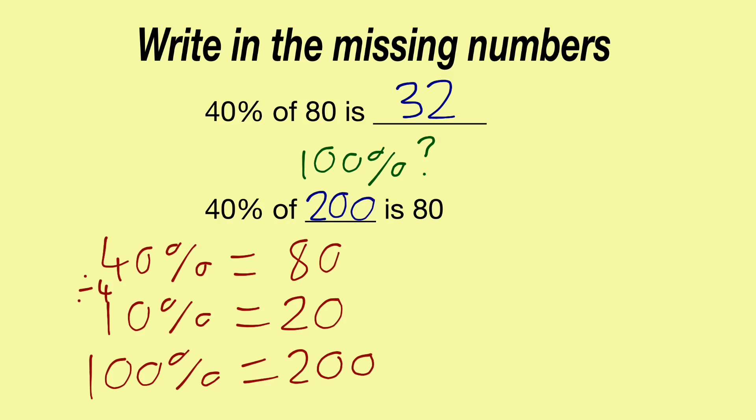Notice how in this question, the answer was smaller than the number we started with, because we're looking for the percentage of an amount. Whereas in this question, the missing number was larger than the answer, because this is the 100% here. This 80 is the part, the fraction, the percentage of that amount.